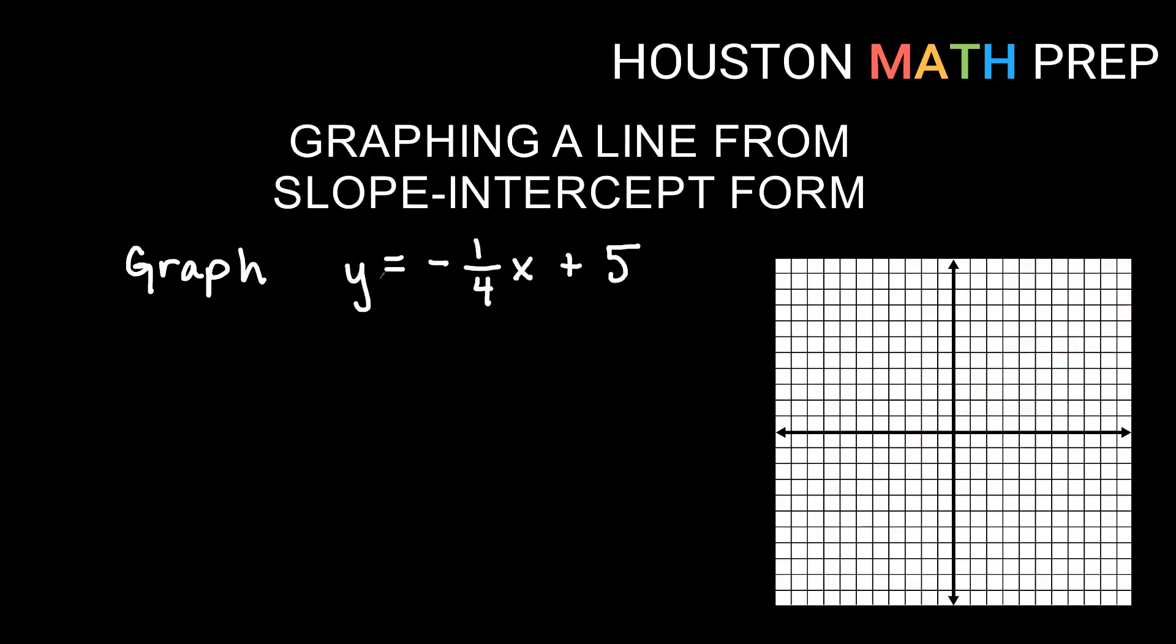Let's do a couple more. So here I have y equals negative one-fourth x plus five. A couple of things. We're going to start at b. So b is five, so I will go up five. One, two, three, four, five. Y-intercept first of five.